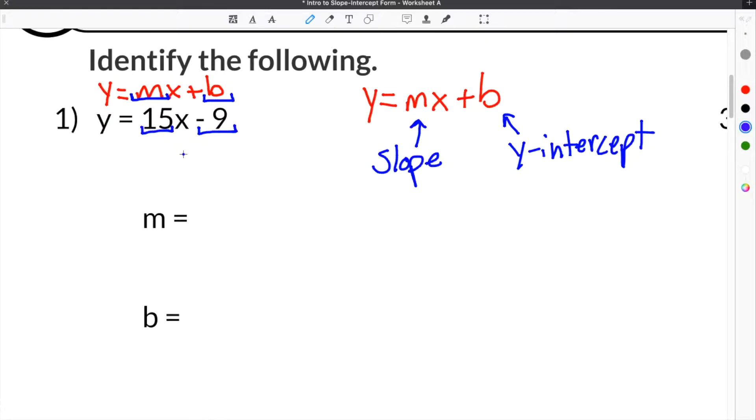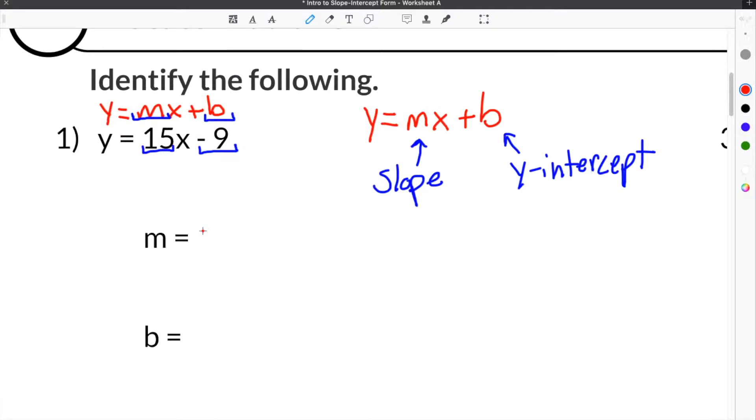If you look at the first problem, you can tell that M and 15 are located in the same position. So that means that the slope for this equation is 15. You will also notice that B lines up with 9. So our Y-intercept is going to be 9. But you have to be careful with both slope and Y-intercept because if they are negative, you have to include the negative.